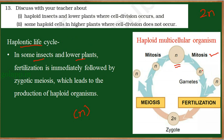This haploid cell undergoes mitosis, which is an equational division, so the daughter cells also receive only one set of chromosomes — another haploid cell. This haploid cell is a gamete. This haploid gamete then fuses with another gamete — a male and a female gamete fuse together — in a process called fertilization.